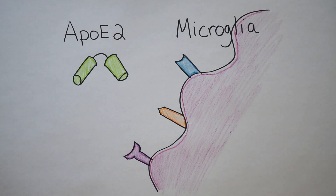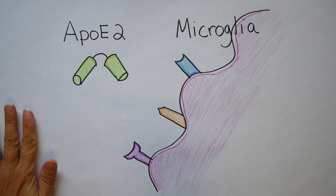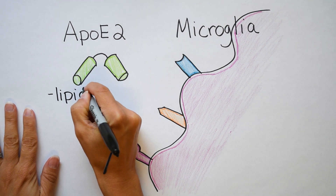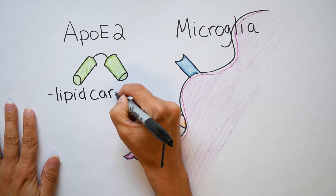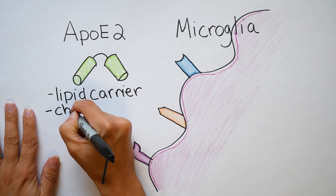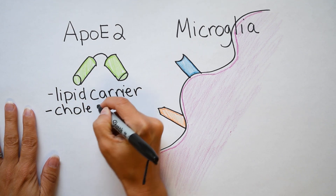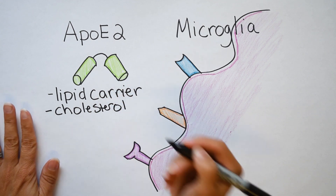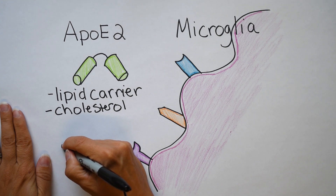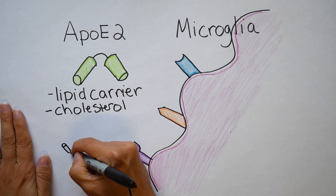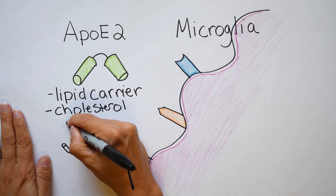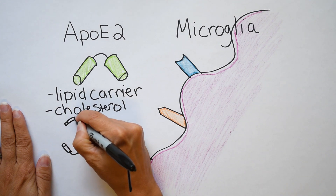APOE2 is primarily made by the liver in the body, and in the brain it's primarily made by immune cells — specifically microglia and astrocytes — which is why it's something I have studied. The liver APOE and brain APOE don't intermix because of the blood-brain barrier. These proteins are really lipid carriers; they primarily carry cholesterol and remove it from the brain.